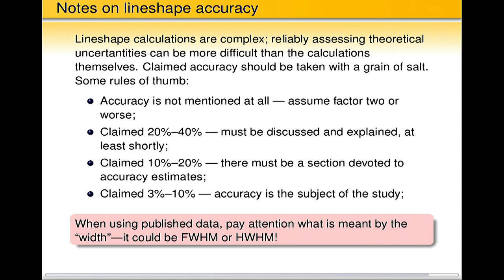A few notes on line shape accuracy. Well, line shape calculation is very complex task. And as always with the complex calculations, to really give a correct value of theoretical uncertainty is sometimes even more difficult than do the calculations themselves. So one should really be critical about using just average, let's say, source on published data on line broadening. I have a few rules of thumb that I use myself, and you can consider them as useful.